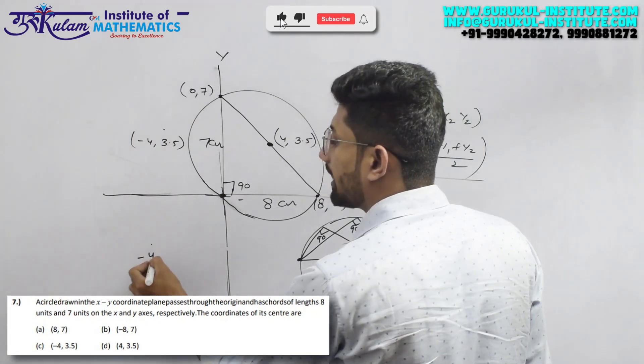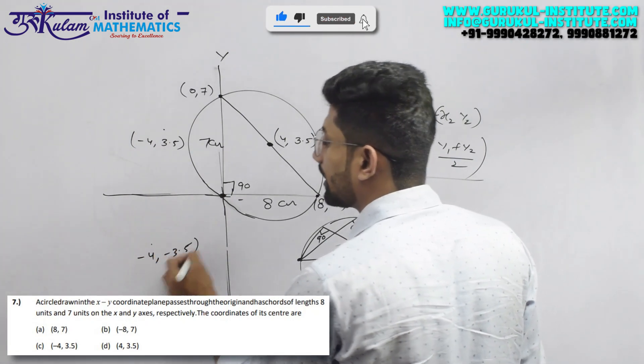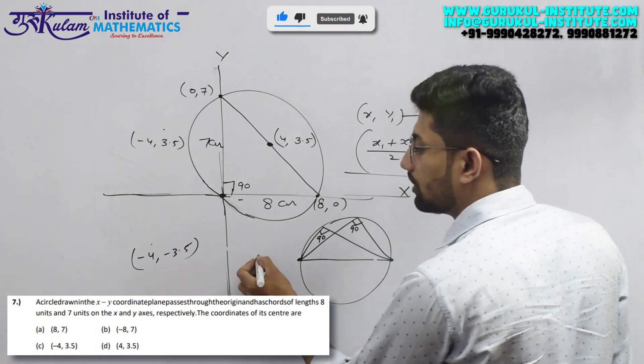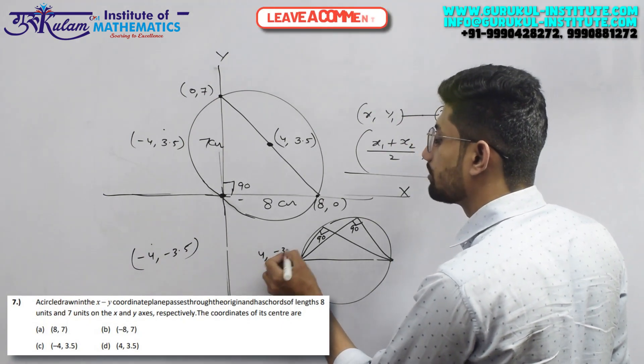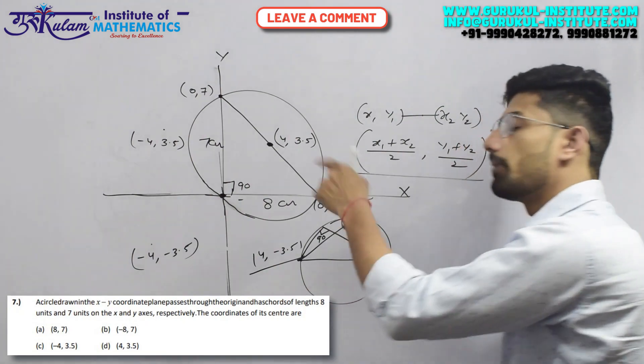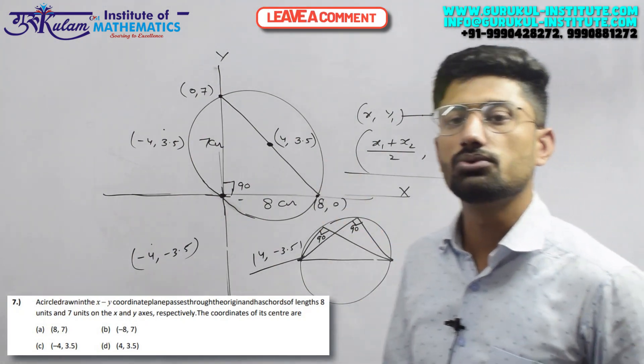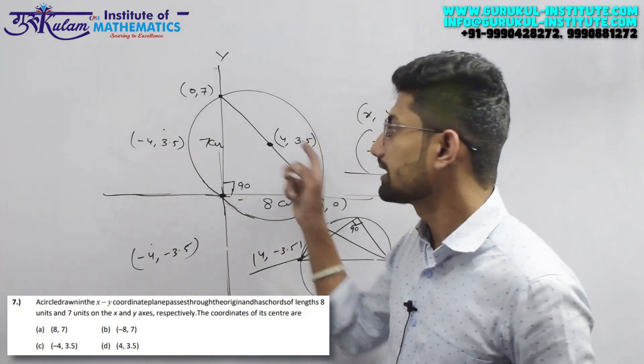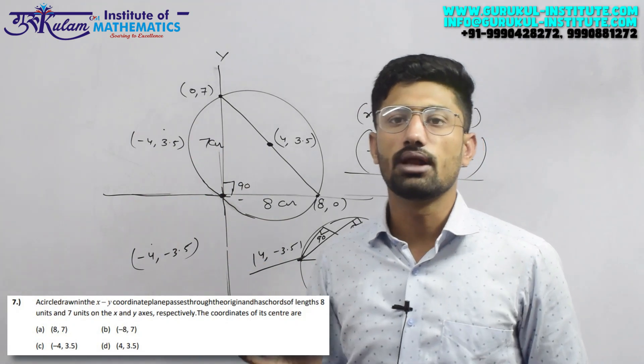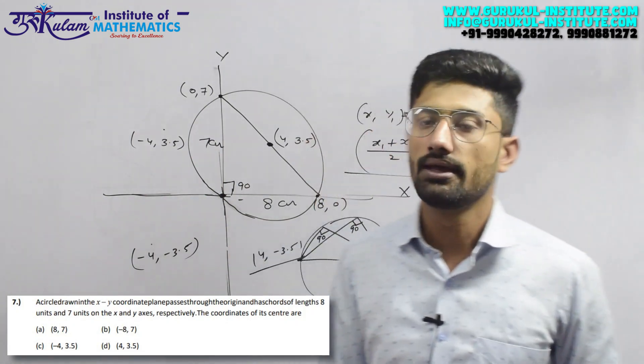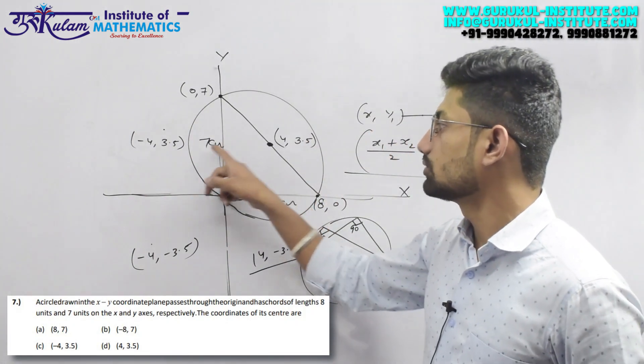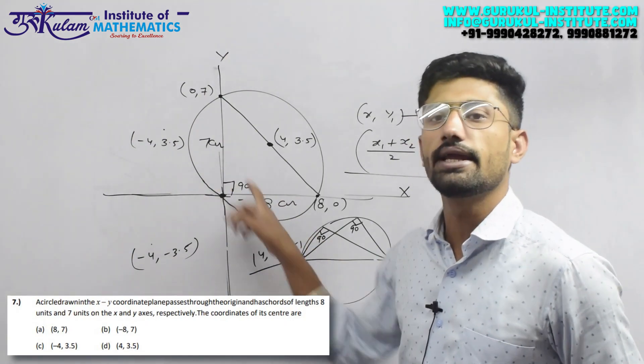If in the fourth quadrant, (4, -3.5). So there are 4 possibilities because for this center, nothing was told about which quadrant it lies in. Only that these two chords have lengths 8 and 7, and it passes through the origin.